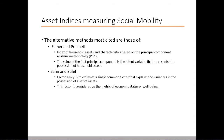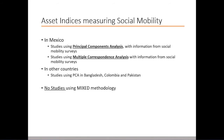The models of Filmer, Pritchett, and Sahn & Stifel are the most cited. The former developed an index on household assets and characteristics based on the Principal Component Analysis methodology, PCA. The value of the first principal component is the latent variable representing the possession of household assets. Sahn & Stifel used factor analysis to estimate a single common factor that explains the variances in the possession of a set of assets, considered as a metric of economic status or well-being. In Mexico, studies calculate asset indices primarily using principal components analysis, and a few use multiple correspondence analysis, which presents better interpretation when variables are categorical. These methods are also found in other regions such as Bangladesh, Colombia, or Pakistan.